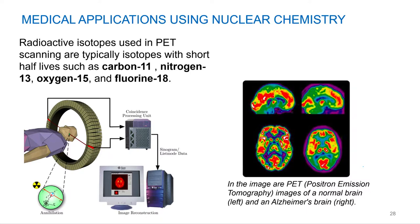Carbon, nitrogen-13, oxygen-15, fluorine-18. So essentially what you can do is you can administer, give a patient something like glucose with carbon-11 atoms on it, which are positron emitters.